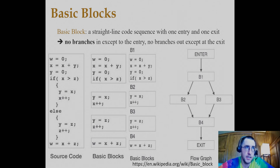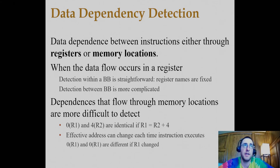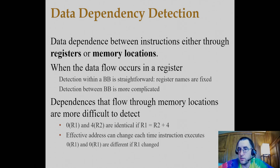Control flow graphs are also important to understand in the processor to get a sense of the limits to which parallelism can help improve performance. Data dependencies between instructions may come from registers — which we've talked about mostly — or from memory locations. Data flow in a register is pretty straightforward, especially within a single basic block. Between basic blocks it can be harder, since you have to track where things have jumped from and to.